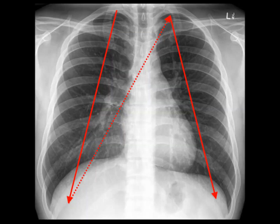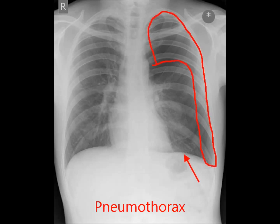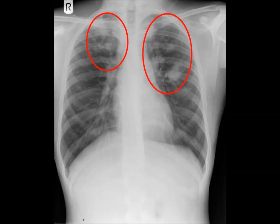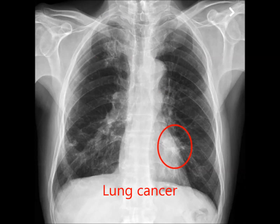Look carefully from the top at the apices to the bottom where the lung extends just below the diaphragm. Compare left to right. First, see if there are any areas where normal lung markings are absent, as this may indicate collapse or pneumothorax. This patient has a left-sided pneumothorax — I've outlined the area where the lung markings are absent. Also notice that the left hemidiaphragm is flattened compared to the right. Also look for any areas of abnormal shadowing, such as in this patient with tuberculosis, or any opaque masses, such as in this patient with lung cancer.